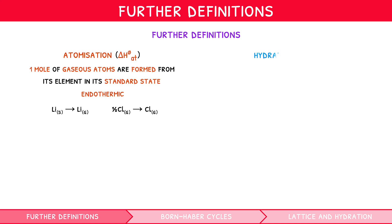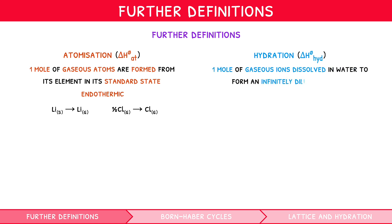Enthalpy of hydration is the enthalpy change when one mole of gaseous ions are dissolved in water to form an infinitely dilute solution. This is also referred to as enthalpy of solvation. It is always exothermic. For example, Cl⁻(g) → Cl⁻(aq).